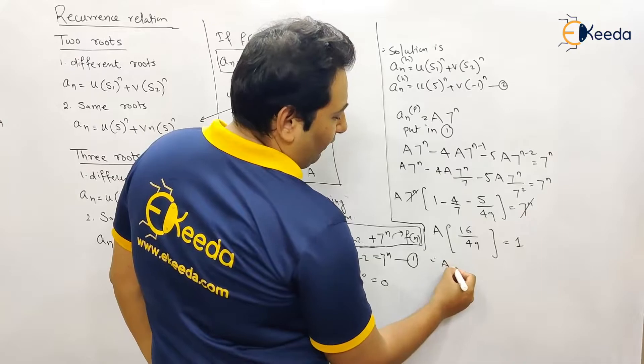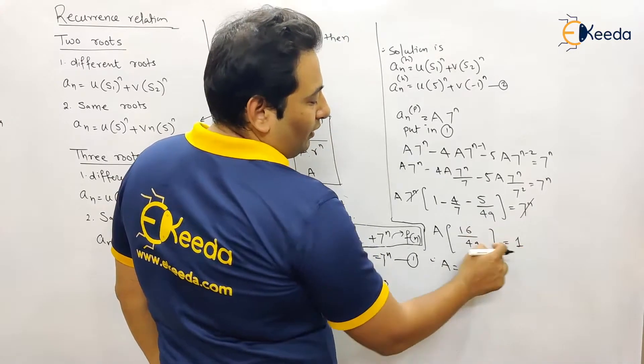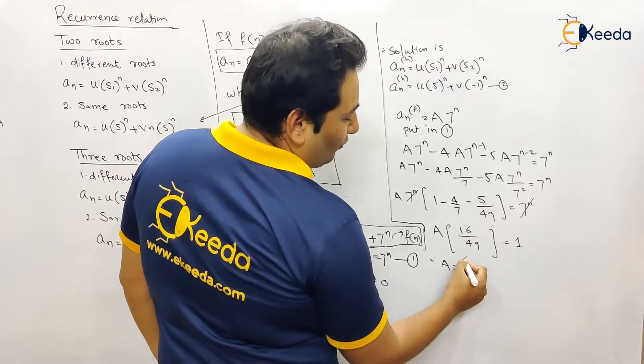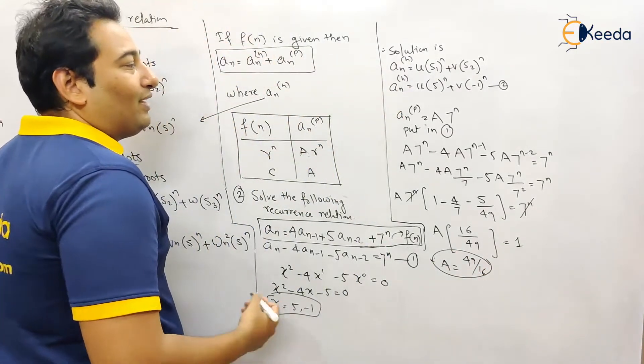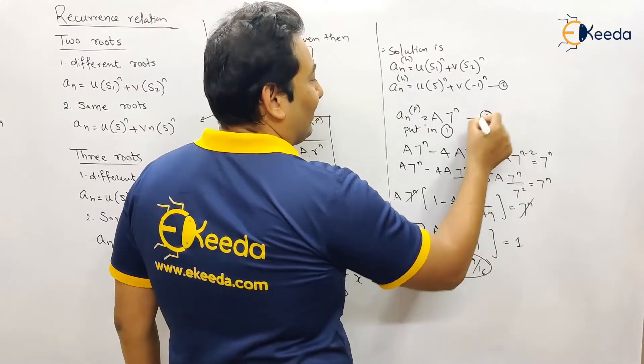Therefore, a will be equal to 49 by 16. So this is a_np. We got a_np. Let us put in equation number three.